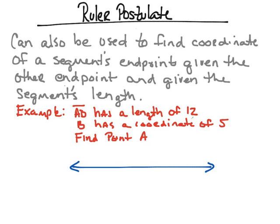Let's look at an example. If we have line segment AB with a length of 12, and point B has a coordinate of 5, we want to find point A. We know point B is at coordinate 5, and there's another point A — but we don't know if it's to the left or to the right of B, so we'll find both possibilities.